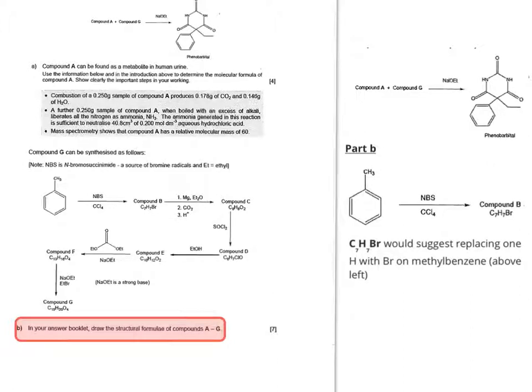Looking at the first part, you're changing methyl benzene into compound B, which is C7H7Br. It says that NBS is N-bromo-succinimide, and it's a source of bromine radicals. Bromine radicals would attack the CH3 group and replace one of the H's with a bromine. I would suggest that compound B is the same as the methyl benzene, except it's CH2Br.